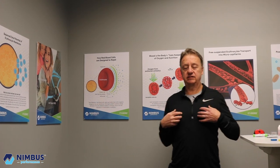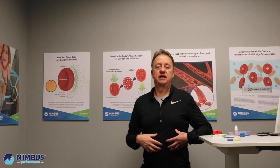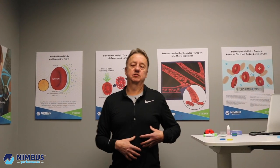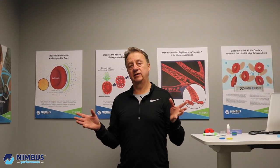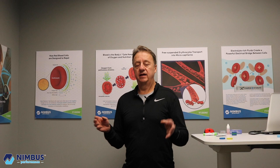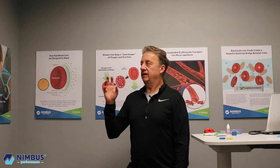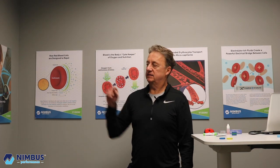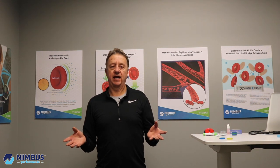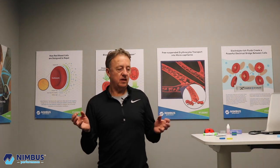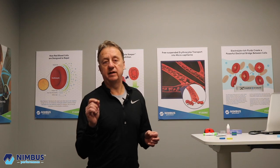As you breathe in, the oxygen goes into your lungs, the red blood comes by the alveoli, picks up that oxygen molecule, and then delivers it throughout the body. The second reason we're interested in having blood cells separated is because there are about a hundred thousand miles of micro-capillaries in the human body, which are the diameter of about one red blood cell.